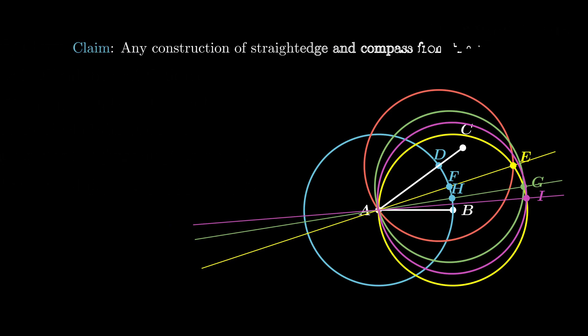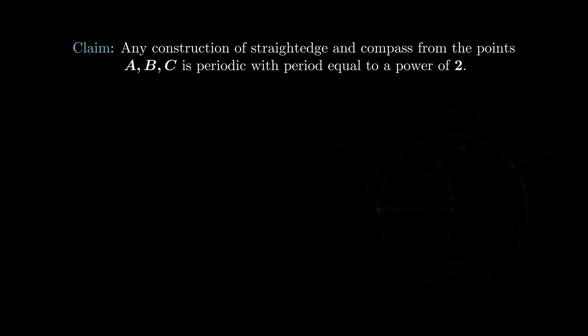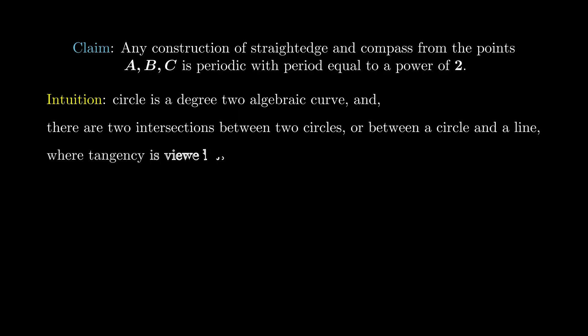The major claim is that any straight edge and compass construction is periodic, with period equals to a power of 2. The high level intuition is that we are only allowed to draw circles and lines. A circle is a degree 2 algebraic curve. And the intersection between two circles, or a circle with a line, have two solutions. So by some sort of induction, the period must be a power of 2. To make the argument rigorous, we will need some algebraic tools, which I will omit here.